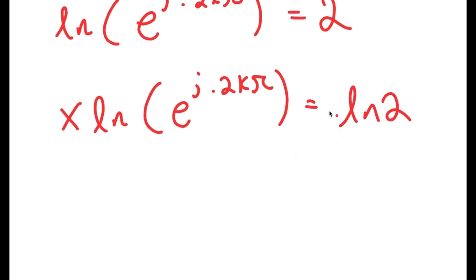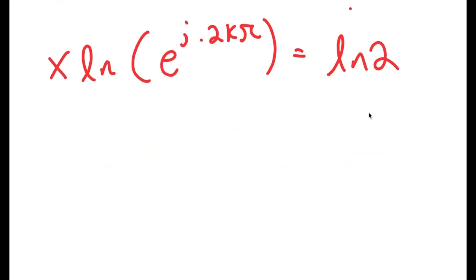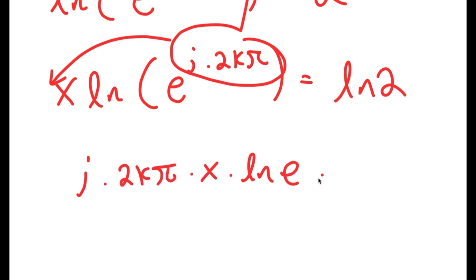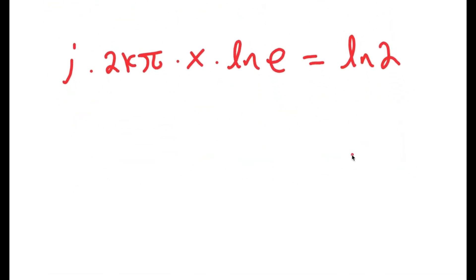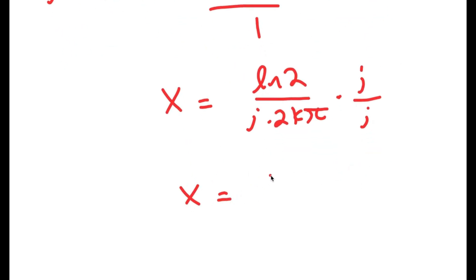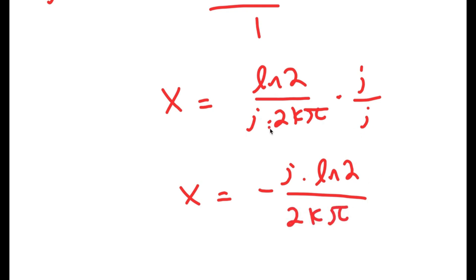I can also move i times 2k·pi to the front. So I have i times 2k·pi times x times ln(e) is equal to ln(2). ln(e) is simply equal to 1. So I get x is equal to ln(2) over i times 2k·pi. And now I'm going to multiply this by i over i. So I get x is equal to negative i times ln(2) over 2k·pi, because i squared is negative one. So this is my solution.